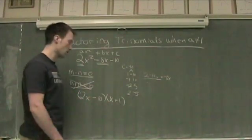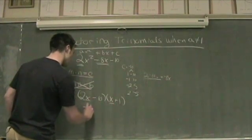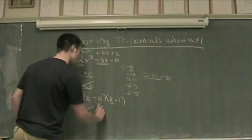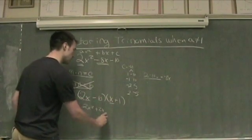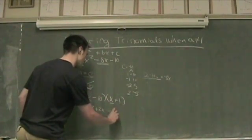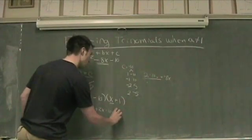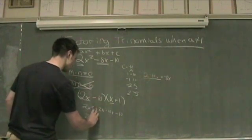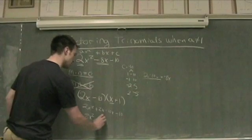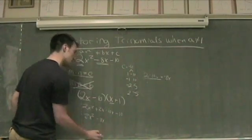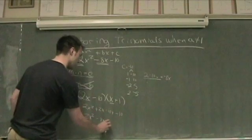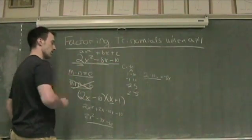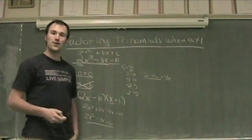Just to make sure, we're going to take 2X times X, which gives us 2X squared. 2X times positive 1, plus 2X. We've got negative 10 times X, so minus 10X, and negative 10 times positive 1, which is minus 10. So 2X squared plus 2X minus 10X is minus 8X, and minus 10. You'll see that this is the same as up here, and so you have it completed.